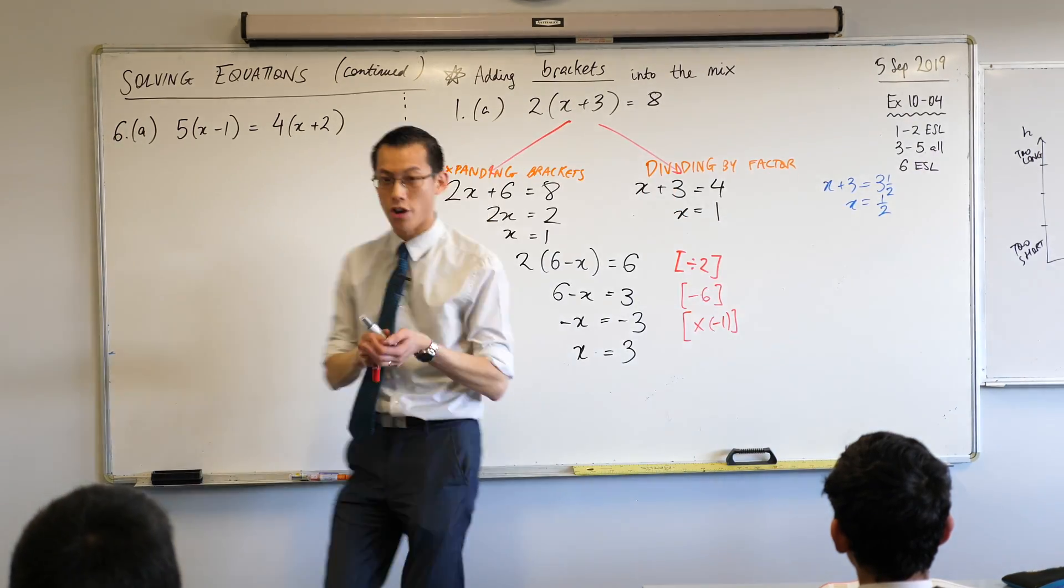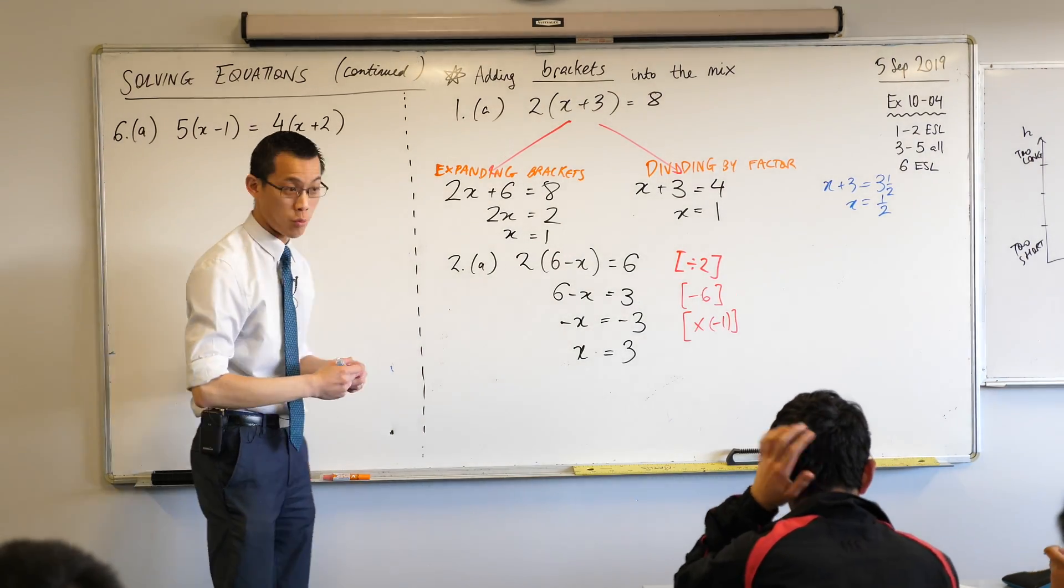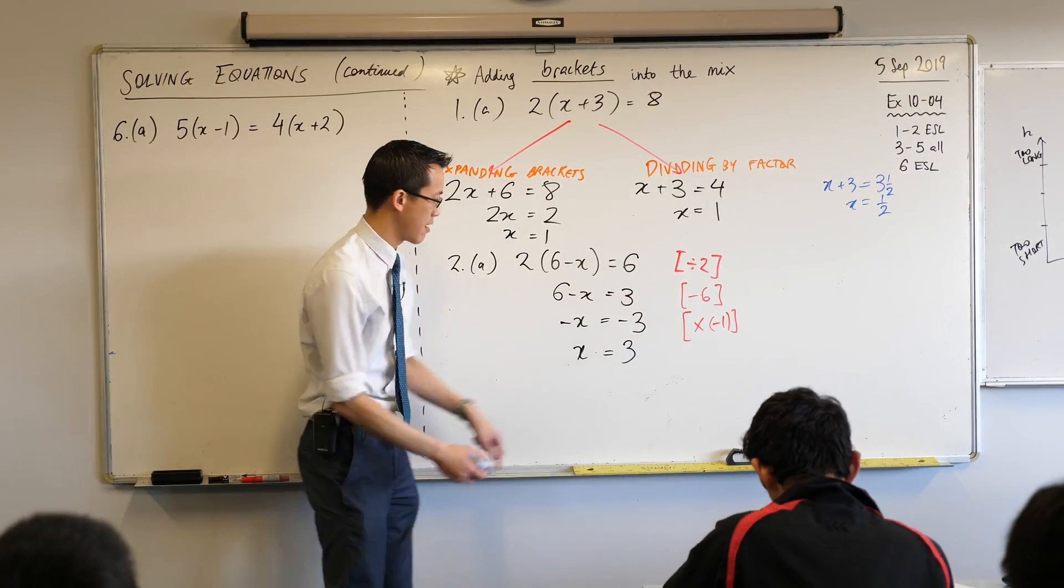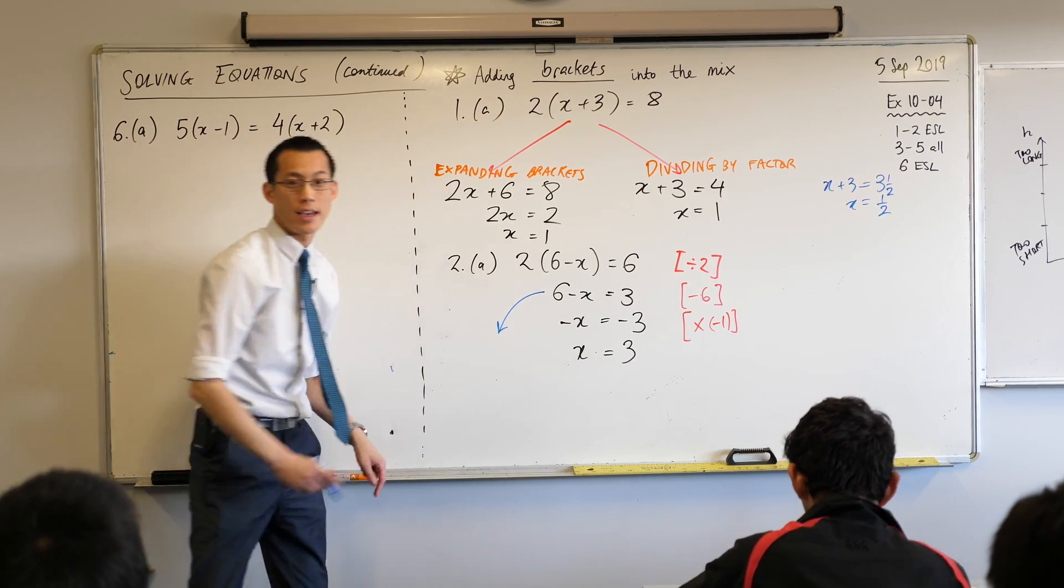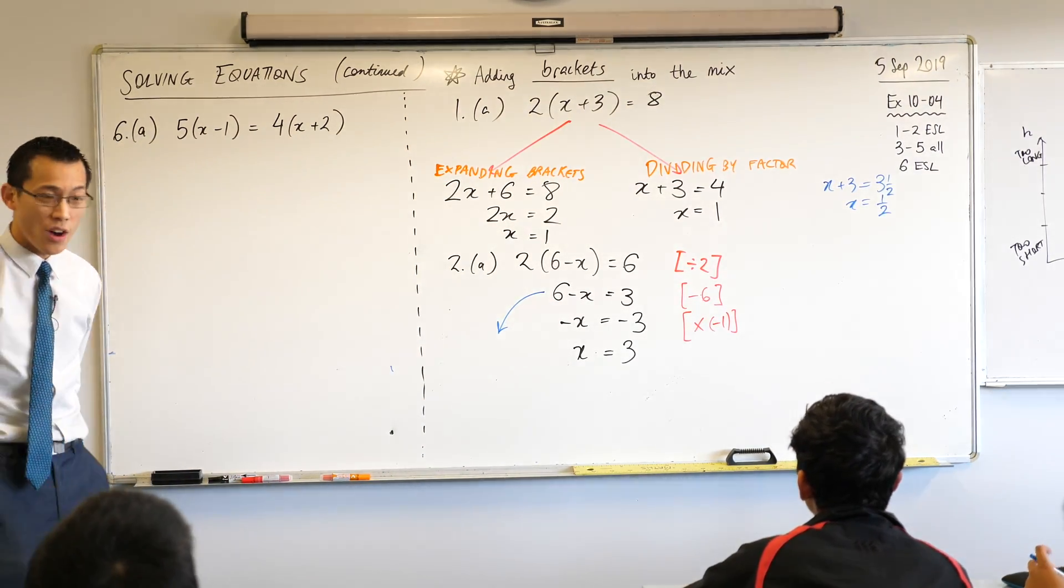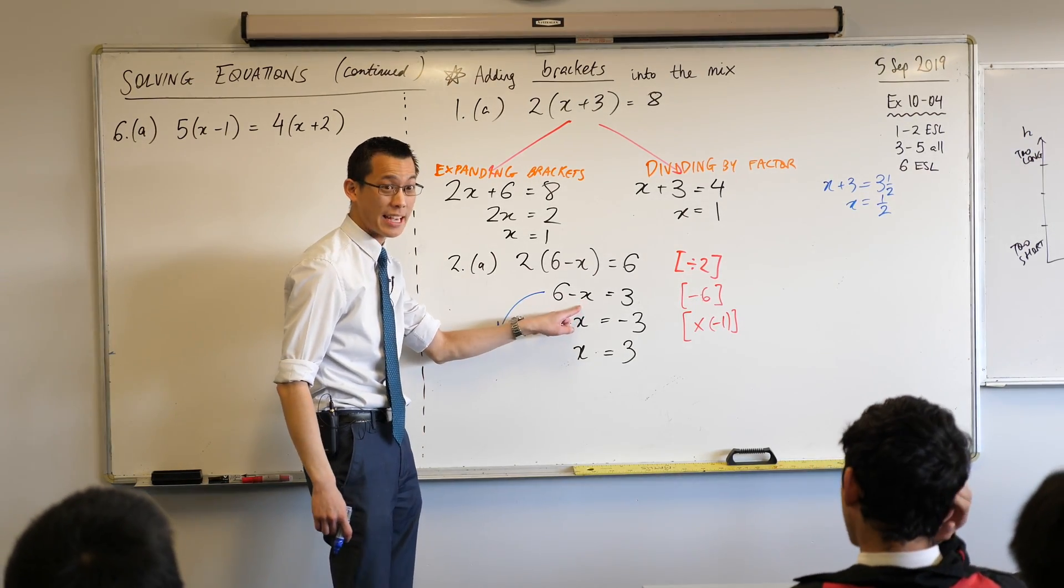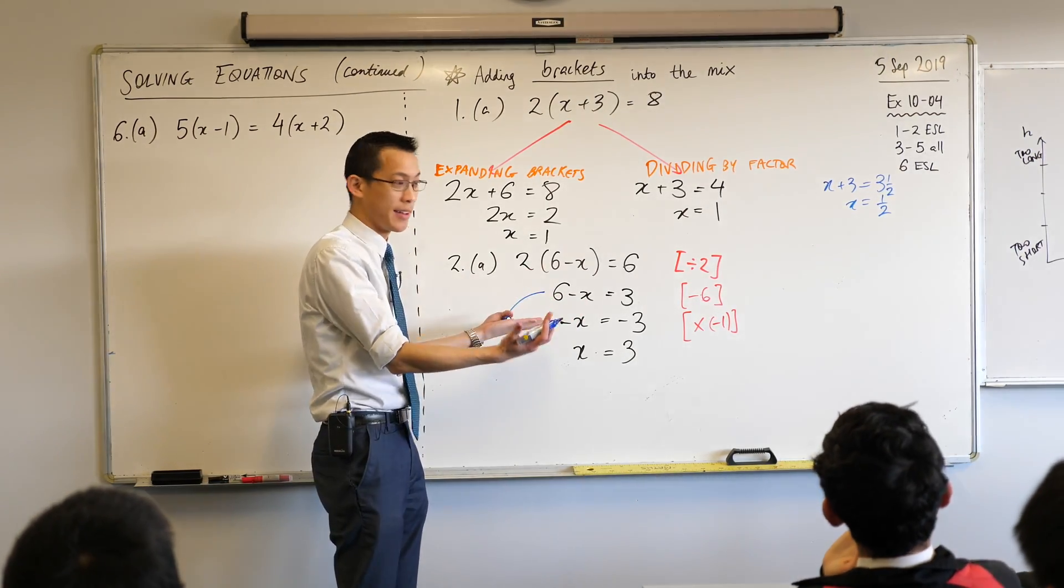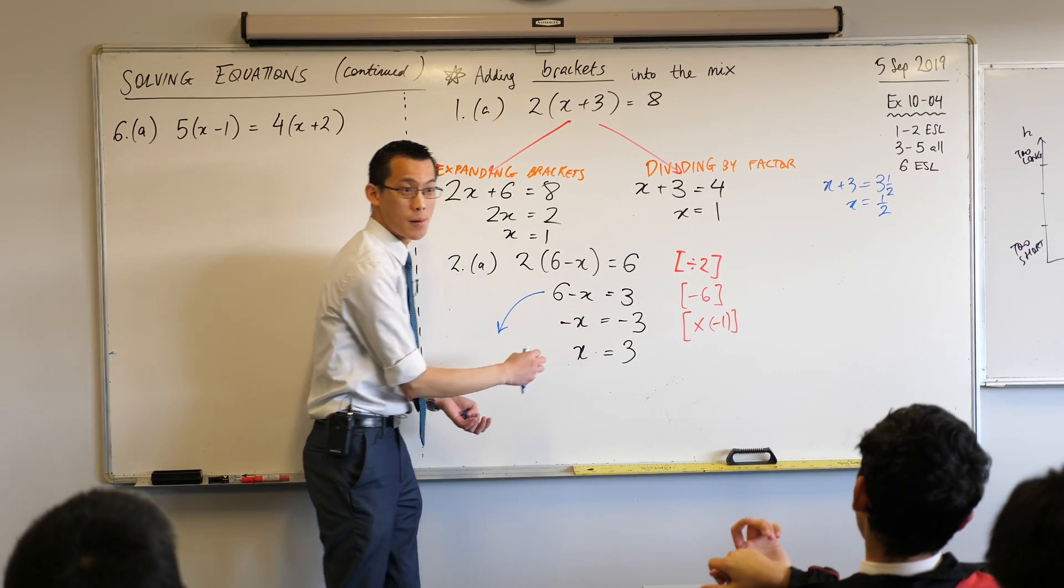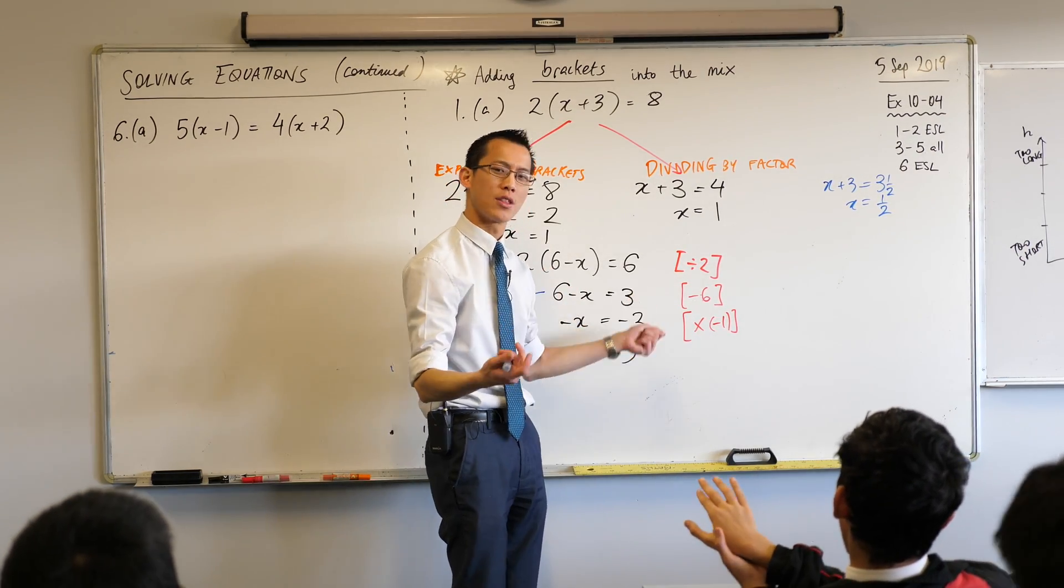Now just a quick side note, some of you may have solved the problem exactly like this but there is another way if you wanted to. You're like gross, all these negatives flying around. I can go from this line here and get rid of the negatives right away. Instead of getting rid of this 6, I'm going to try and get rid of this negative x. What should I do to both sides to get rid of this negative x?